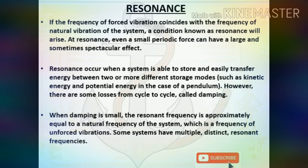Resonance: if the frequency of forced vibration coincides with the natural frequency of the system, a condition known as resonance arises. At resonance, even a small periodic force can have a large and sometimes spectacular effect. Resonance occurs when a system can store and easily transfer energy between two or more storage modes, such as kinetic and potential energy. There are some losses from cycle to cycle called damping. When damping is small, the resonant frequency is approximately equal to the natural frequency of the system. Some systems have multiple distinct resonant frequencies.